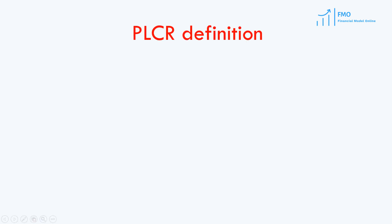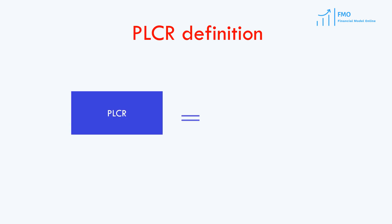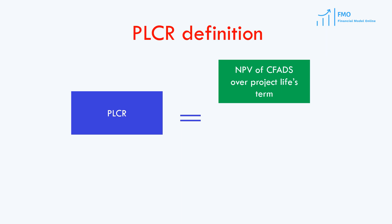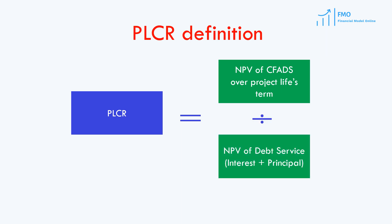There is another ratio that we usually encounter in project finance term sheets and agreements: the project life coverage ratio, or PLCR. Like LLCR, PLCR takes the time value of money into account. PLCR is a ratio of the present value of CFADs over the life of the project to the present value of debt service. Because PLCR takes the present value of CFADs over the project's life — as opposed to CFADs over the debt's term in LLCR — the PLCR ratio is generally higher than LLCR.